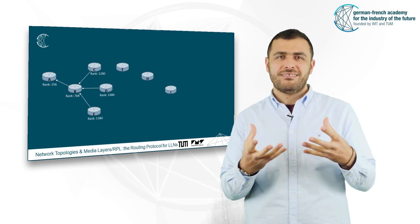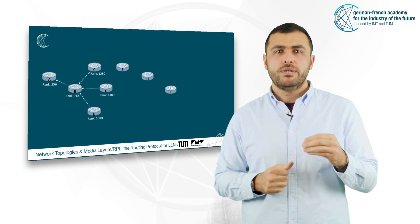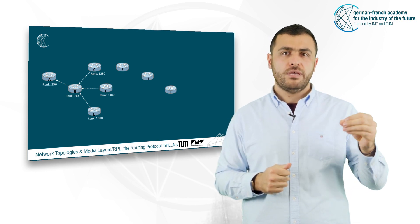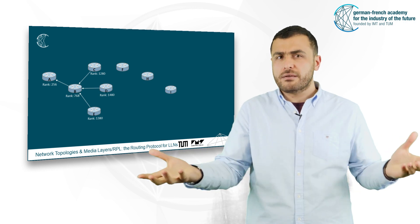Note that there is a case that we did not talk about yet. What a node will do if it receives a new DIO while it already has a preferred parent and thus a rank?